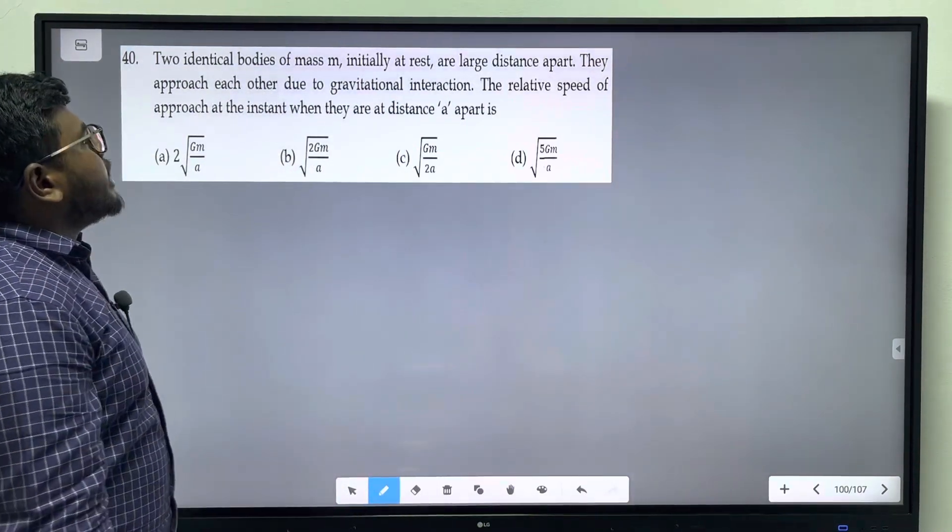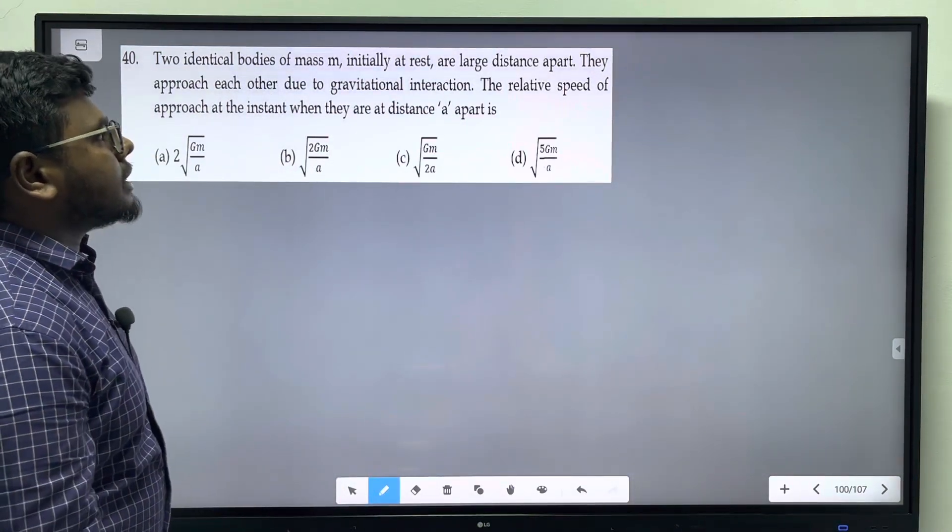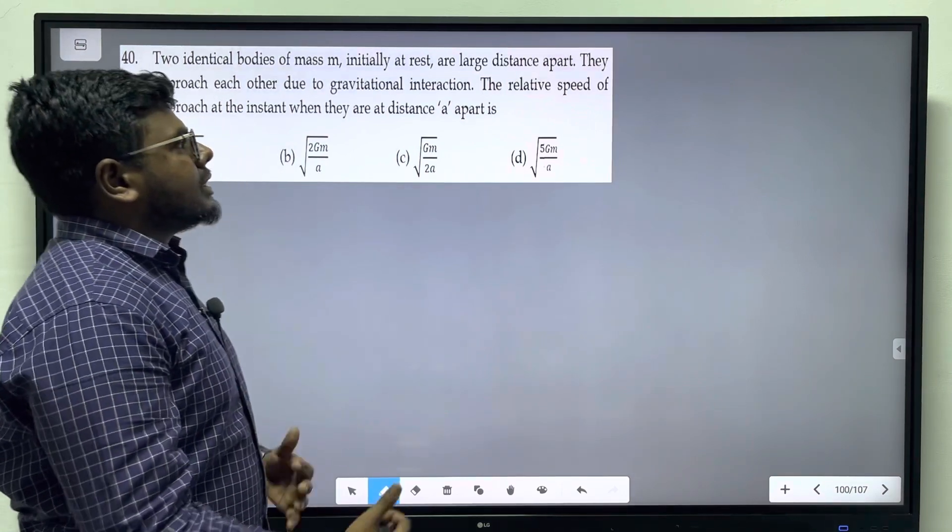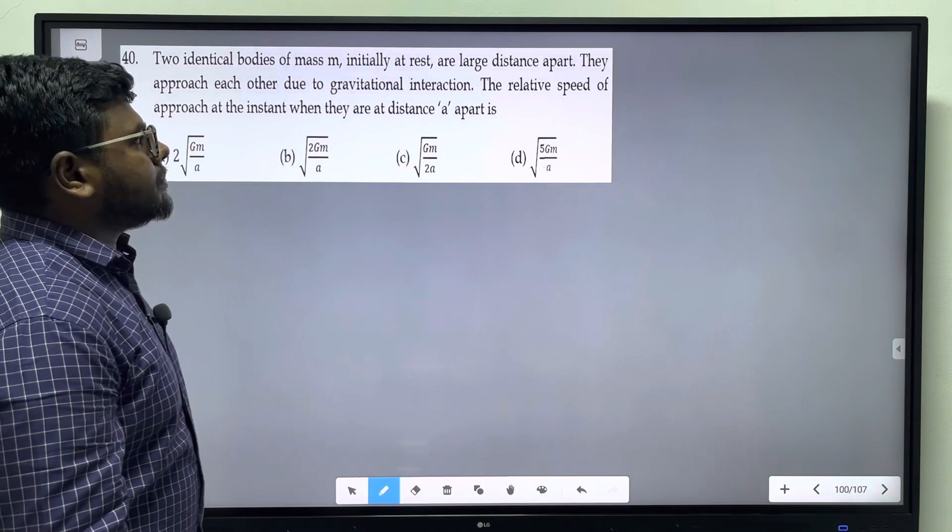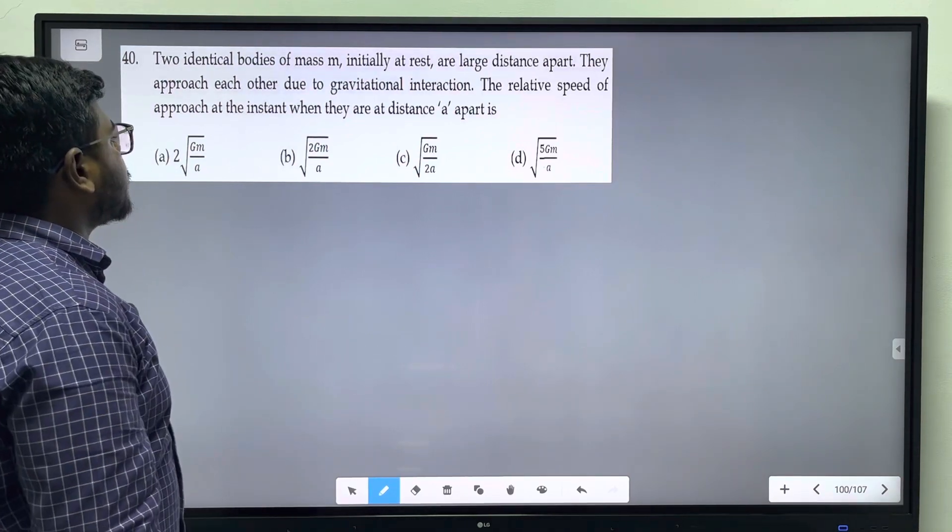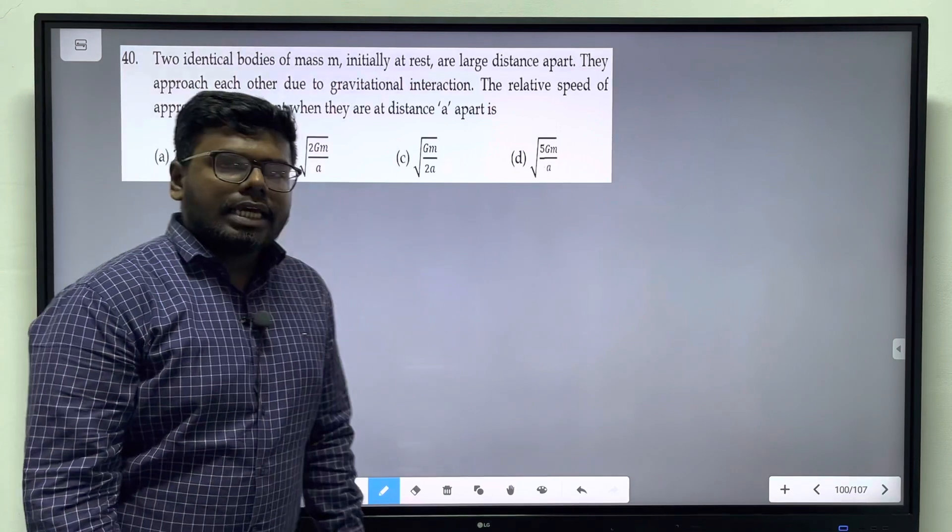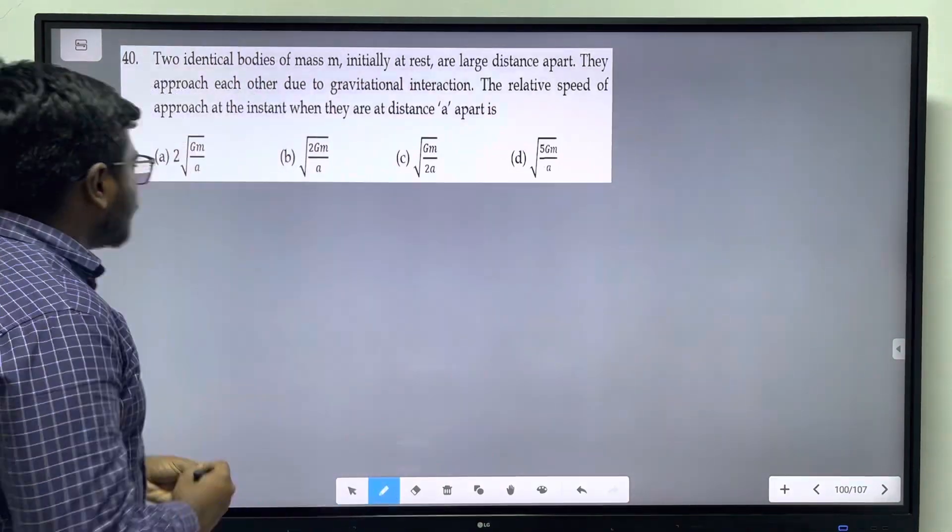Two identical bodies of mass M initially at rest are large distance apart. They approach each other due to gravitational interaction. The relative speed of approach at the instant when they are at distance A apart is.